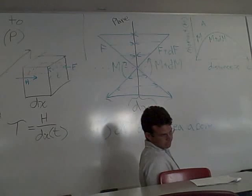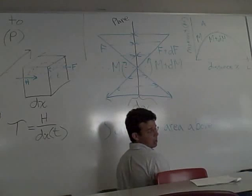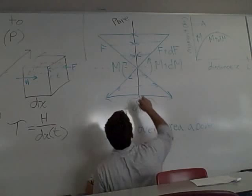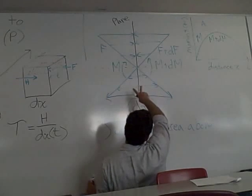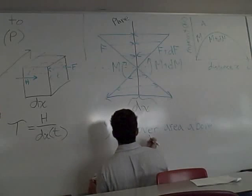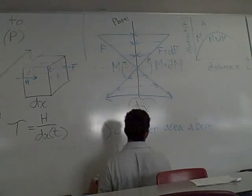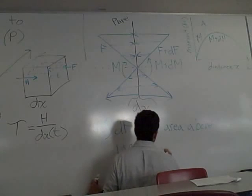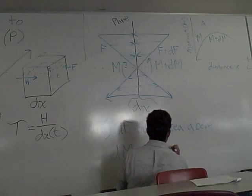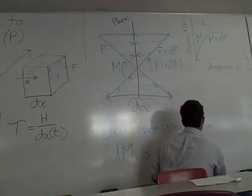And we also see that the resulting bending moment on plane A is going to be dm. Because when you sum up the moments, the m's are going to cancel out and you're left with dm. So dm is the moment acting on plane A.